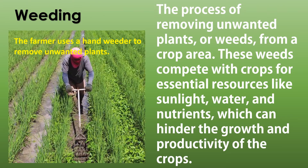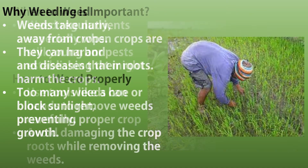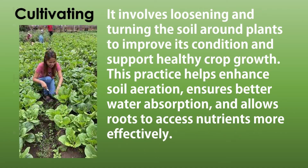Weeding is the process of removing unwanted plants, or weeds, from a crop area. These weeds compete with crops for essential resources like sunlight, water, and nutrients, which can hinder crop growth and productivity. Weeds take nutrients away from crops, harbor pests and diseases, and can block sunlight. It is important to weed regularly, especially when crops are still young. You can use tools like a hoe or your hands to remove weeds carefully, avoiding damage to crop roots.